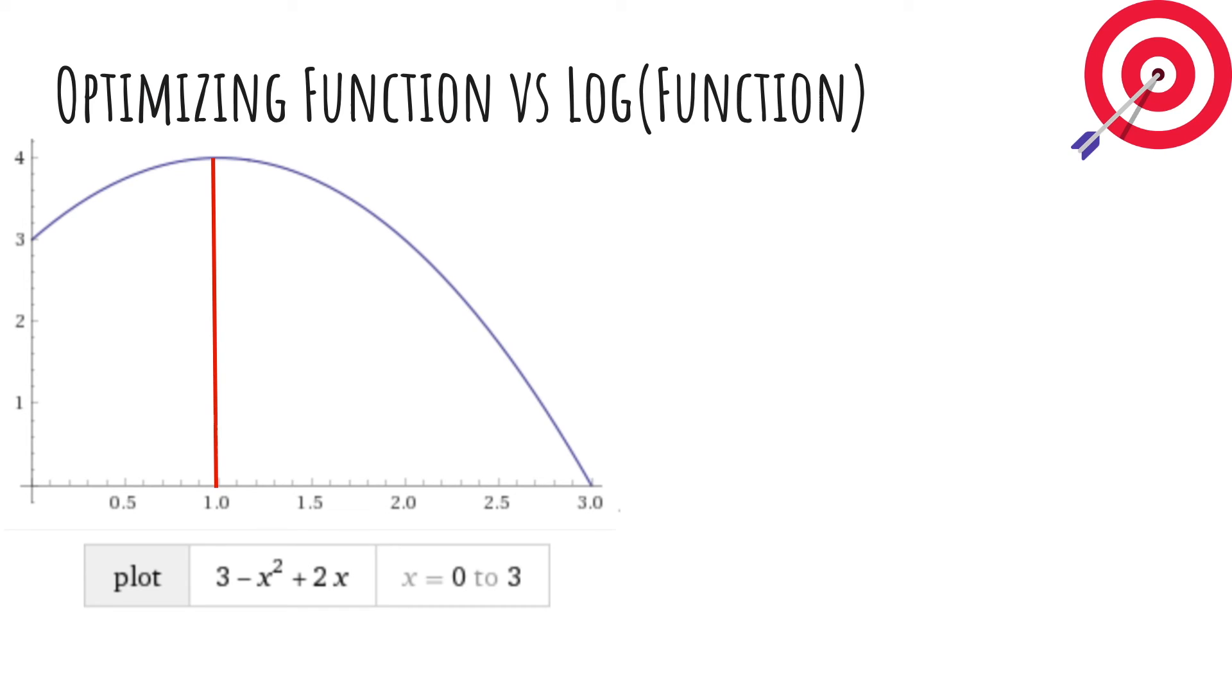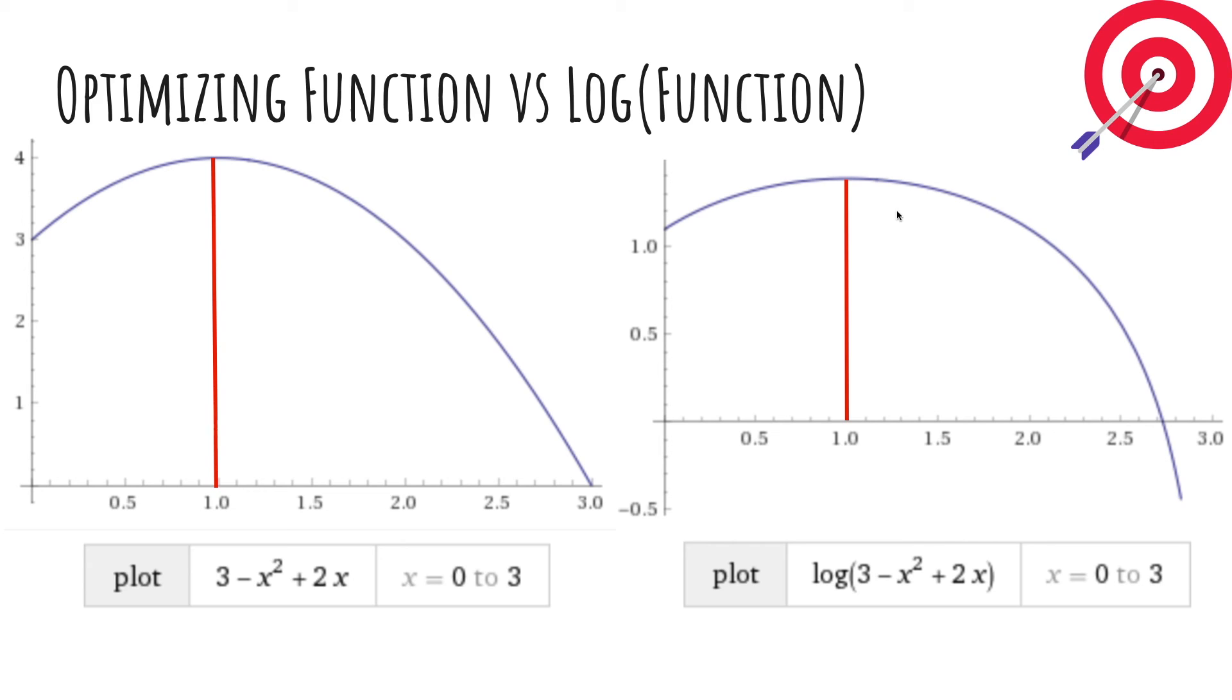So why can we maximize the log likelihood or the log function instead of just the function? It turns out here's the function. Here's log of that function. The values are actually different if you look at the x-axis. However, it happens that 1 still maximizes both of them. And it actually turns out because log is monotone increasing, it preserves order. And so whatever was maximum in the original function will also maximize the log of that function.